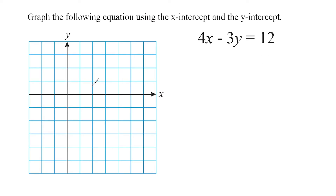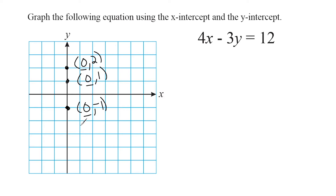What we should understand about any point on the y-axis is that the x value will always be zero. For instance, if our point was located right here, we know the x value is going to be zero and the y value would be two. The coordinates here would be zero, one, or zero, negative one, and so forth. So if you have a point directly on the y-axis, your x value will always be zero, and we are going to use this knowledge to our advantage.